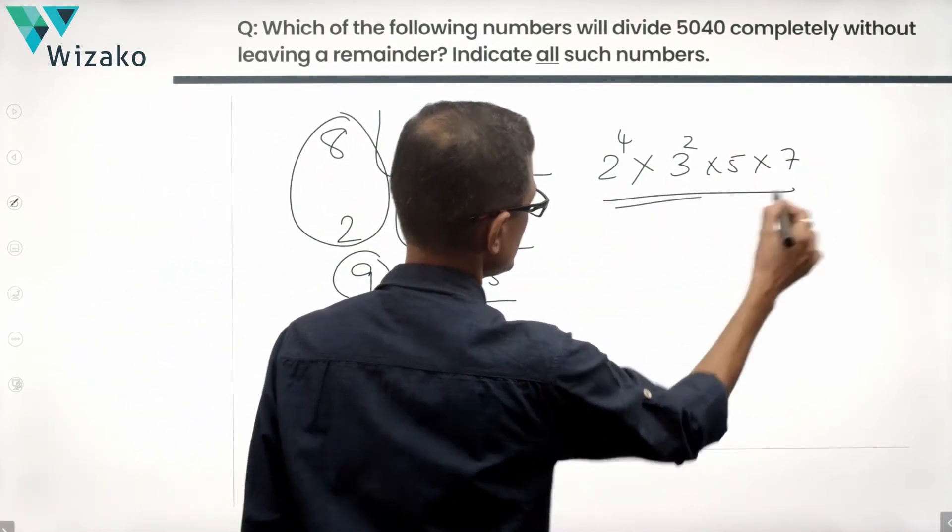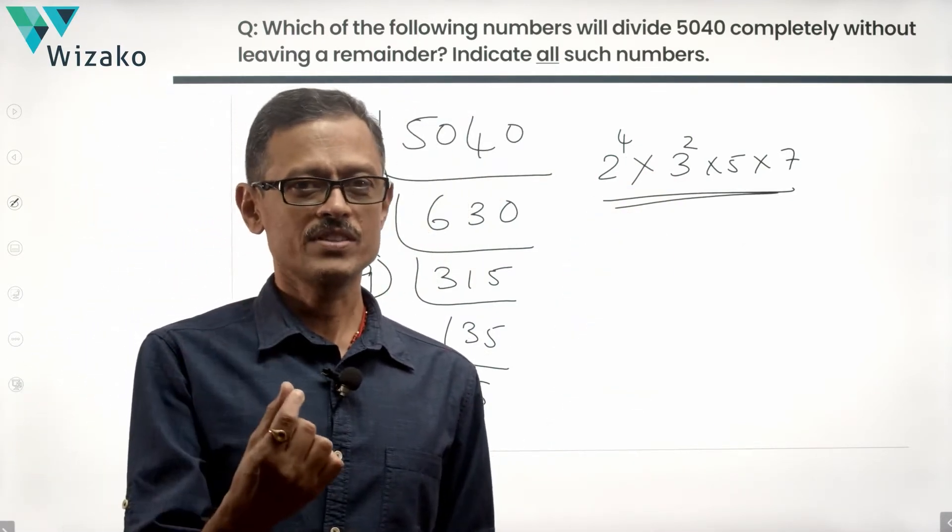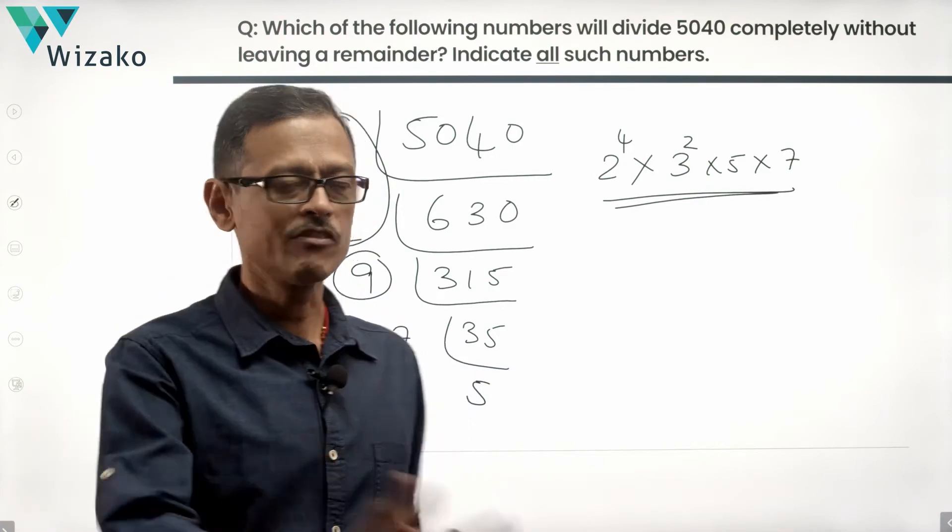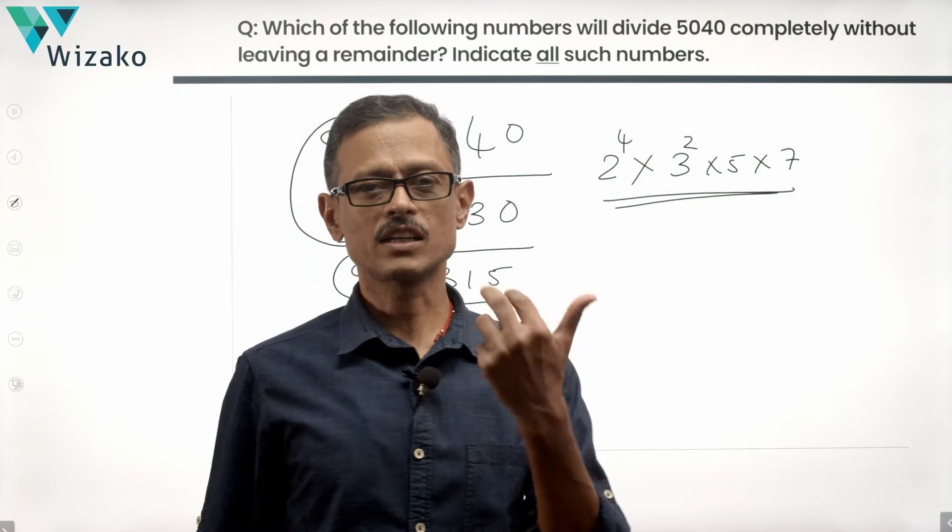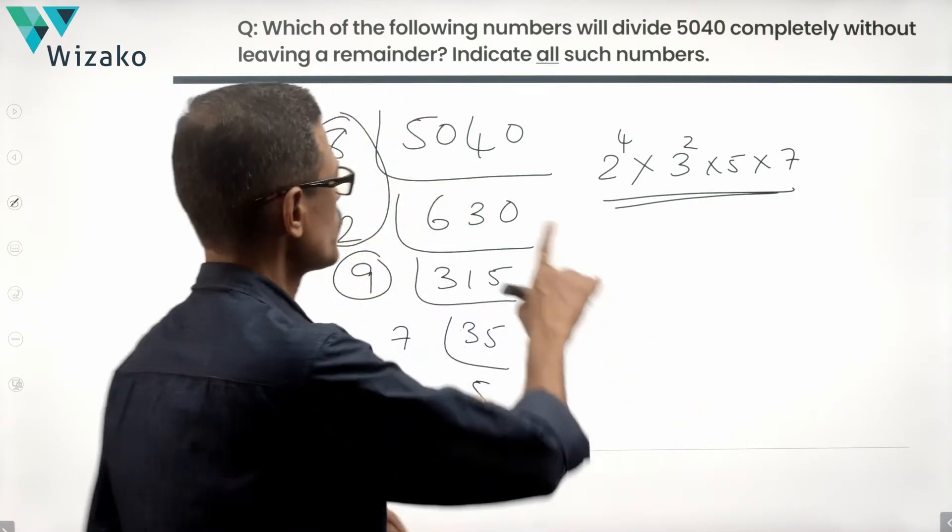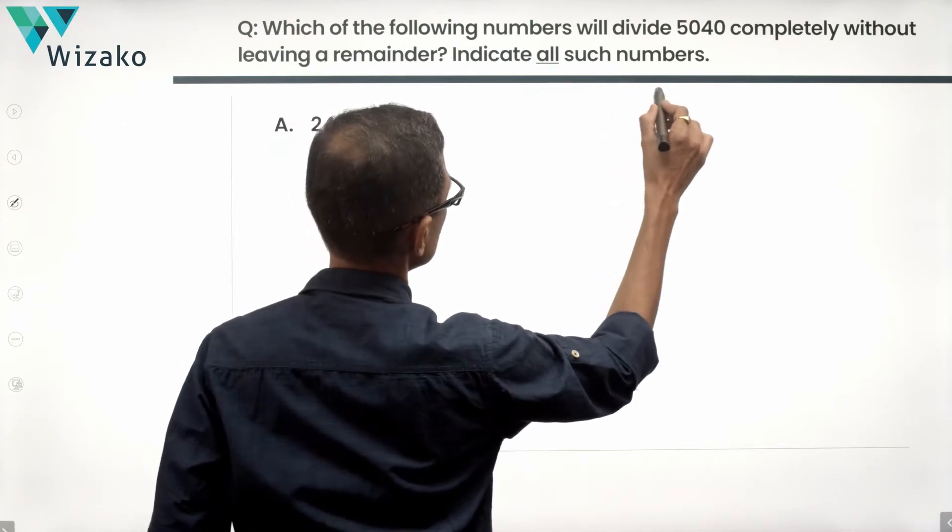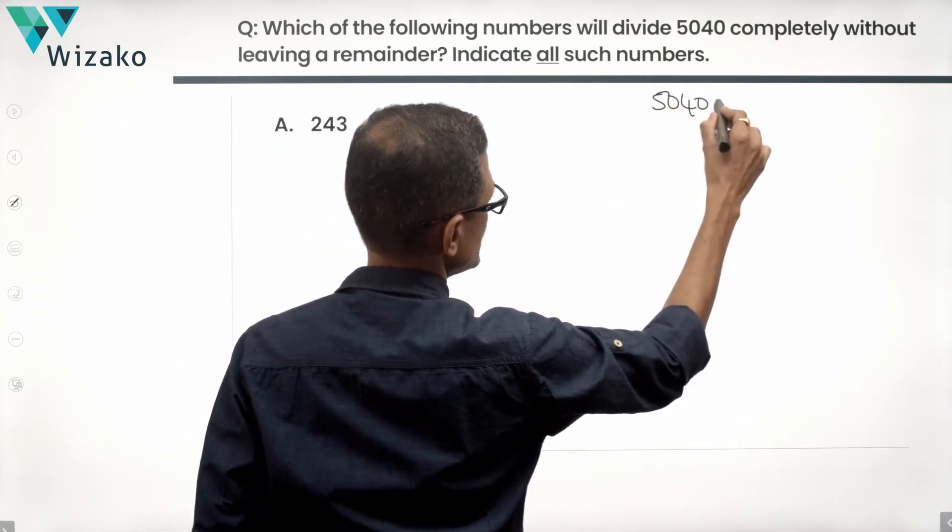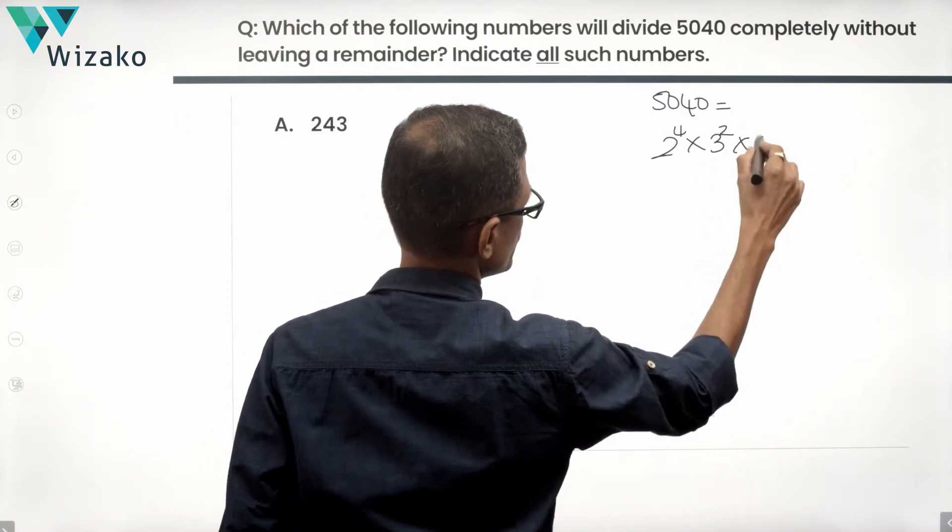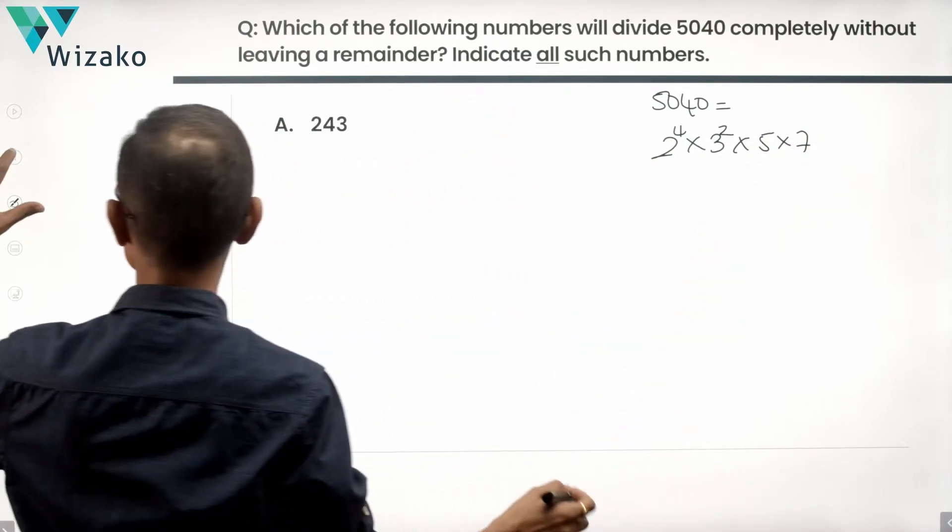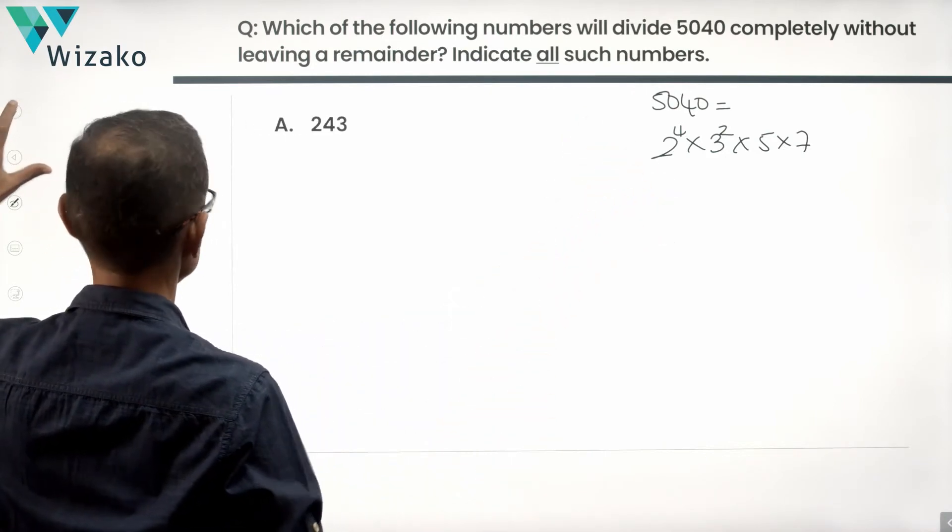9 can be written as 3 square times 5 times 7. This is essentially our 5040. Now let's pick each of these answer options and check out whether they have powers of 2, 3, 5 and 7 in quantities that are lesser than or equal to that are found in 5040. So quickly in the next slide, I'm going to write 5040 is equal to 2 raised to the power of 4 into 3 square into 5 into 7.